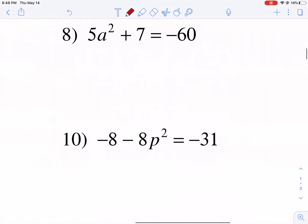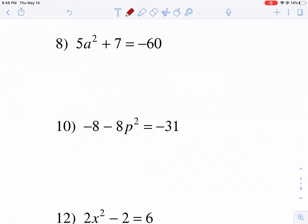So number 10, we have negative 8 minus 8p squared equals negative 31. First you want to add, reverse order of operations, add 8. You get negative 8p squared equals, what is that, negative 23. Because negative 23 plus 8, yeah, that's right, negative 23. Now we need to divide both sides by negative 8. So we divide both sides by negative 8.